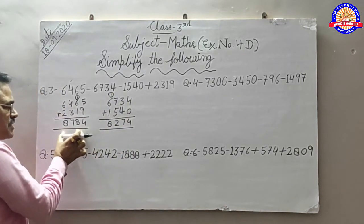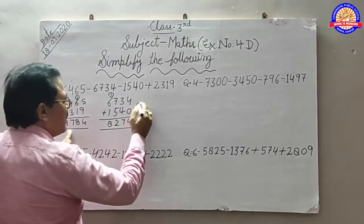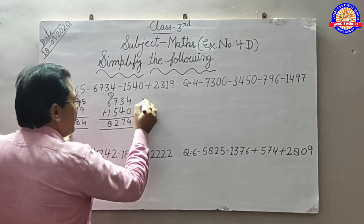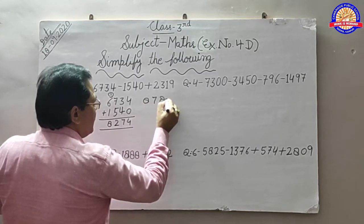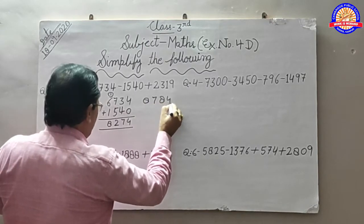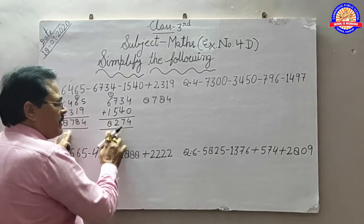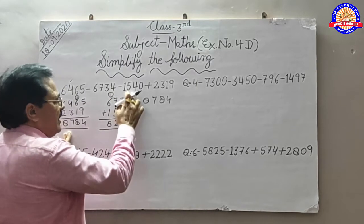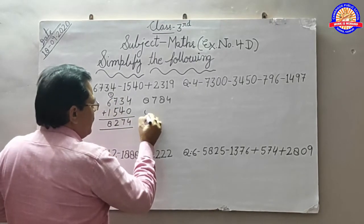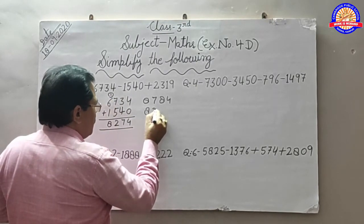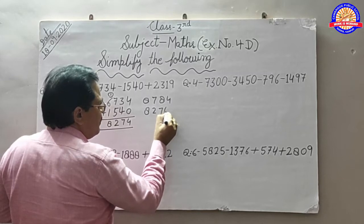जो यह आपने first number किया है, इसको हम ऊपर ले जाएंगे: 8, 7, 8, 4. इसके नीचे यह number लिखेंगे जो आपने minus-minus को plus किया है: 8, 2, 7, 4.